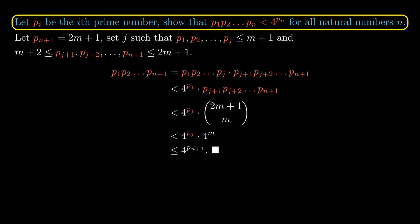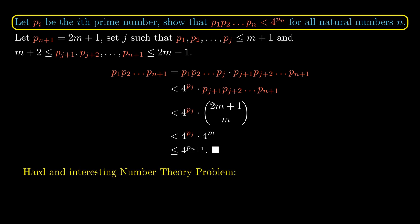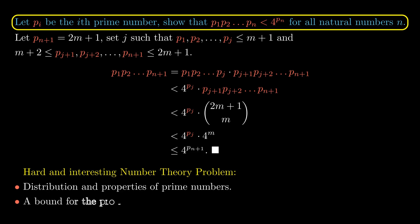This completes our inductive step, thus proving the desired inequality for all natural numbers n. I think this is a hard and interesting number theory problem since it relates to the distribution and properties of prime numbers, which is of interest in modern number theory research. In particular, I really like how we can bound the size of the product of the first n primes, giving us a sense of how prime numbers grow.